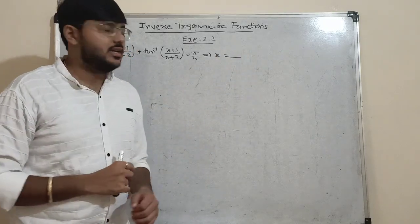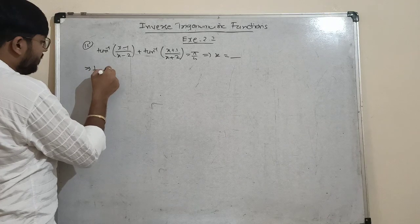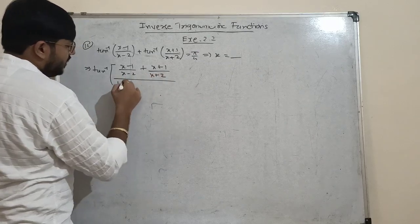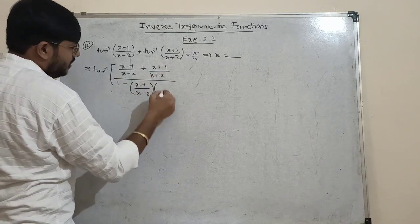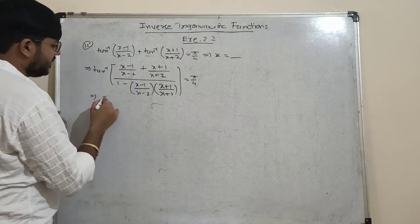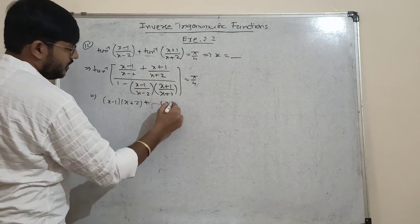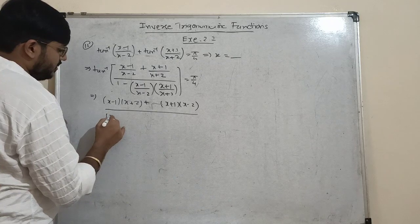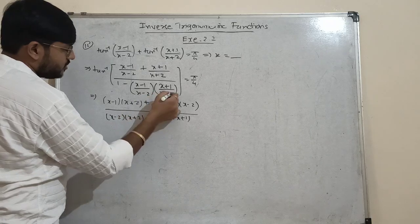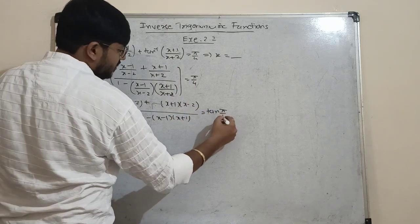This equation is a solution-type problem. Apply the tan⁻¹ addition formula on the left side: tan⁻¹[(( x-1)/(x-2) + (x+1)/(x+2)) / (1 - ((x-1)/(x-2))·((x+1)/(x+2)))] = π/4. The denominators (x-2)(x+2) cancel from both numerator and denominator, and tan(π/4) = 1.